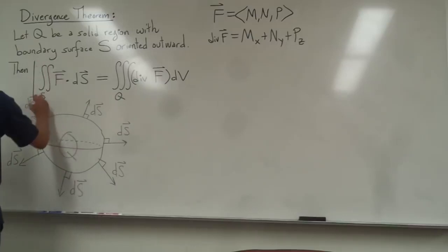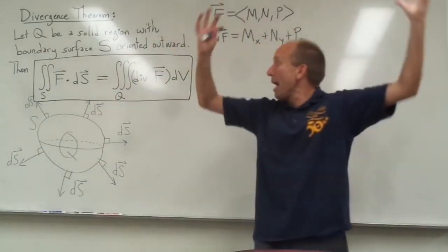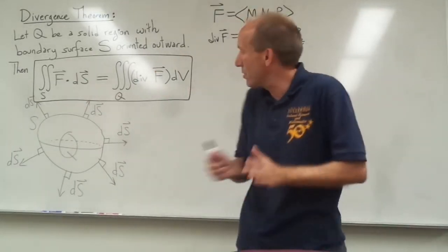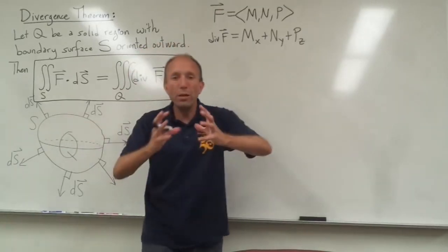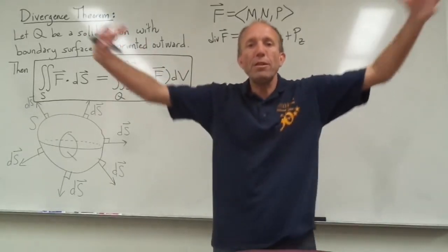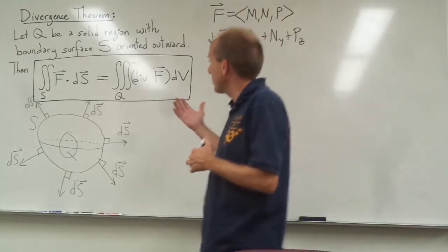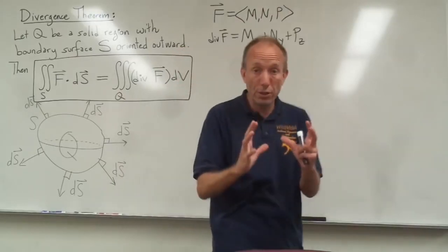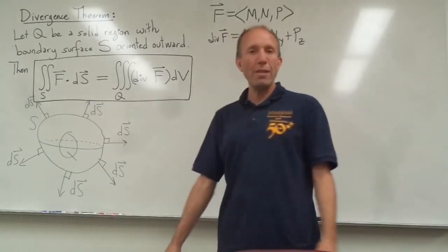I'm not going to take the time to prove the theorem right now. Basically, the idea is that the flux emanating out of a closed surface — remember that our dS vectors, our perpendicular vectors to the surface, are always oriented outward for a closed surface, so the positive direction is outward. We are measuring the flux out through this surface, which is really measuring the tendency of the vector field to spread apart. That's what the divergence is doing — calculating the tendency of the vector field to spread itself apart. So there is definitely a relationship between the flux through a closed surface and the triple integral of the divergence throughout the solid.